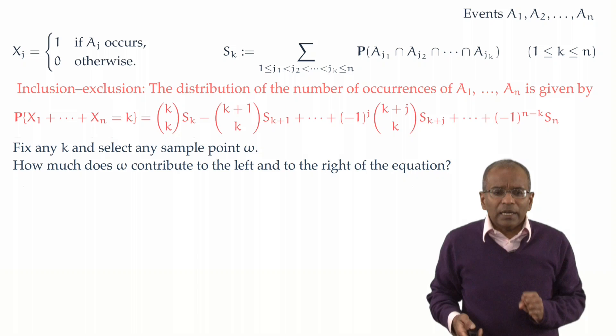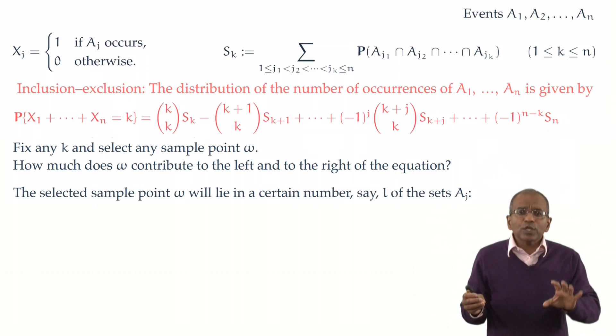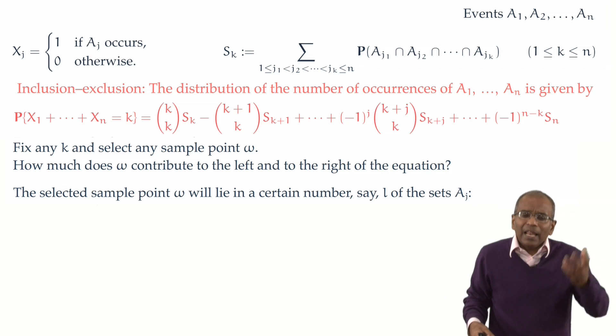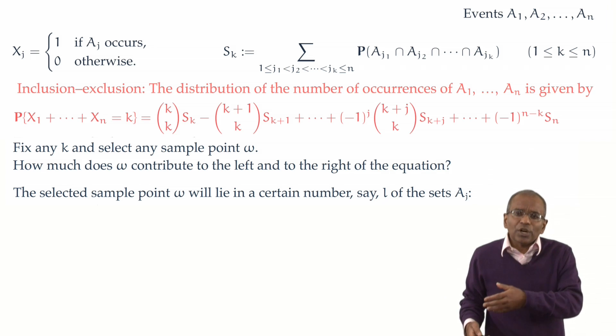So, let's directly start by saying, the selected sample point, whatever it is, is in a certain number of these events, A1 through An. Let's say L, where L is a number between 0 and N. What can we conclude?